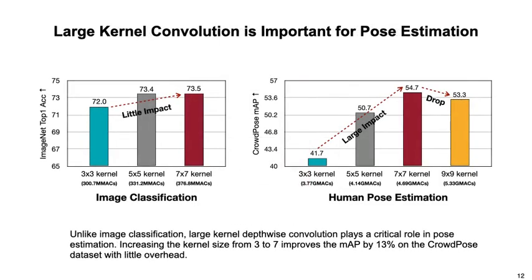Based on the single-branch architecture, large-kernel convolution benefits LightPOS from two perspectives. On one hand, unlike image classification, large-kernel depth-wise convolution plays a critical role in pose estimation — increasing the kernel size from 3 to 7 improves the MAP by 13% on the proposed dataset with little overhead. On the other hand, large kernels enhance parallelism, making the model run at higher speed.